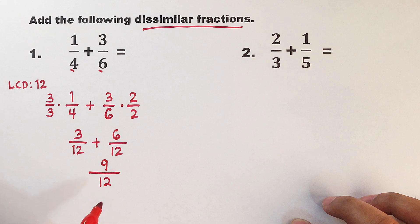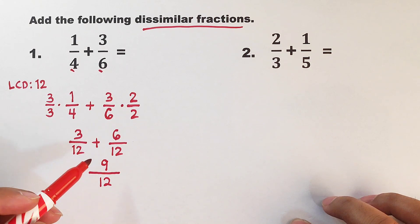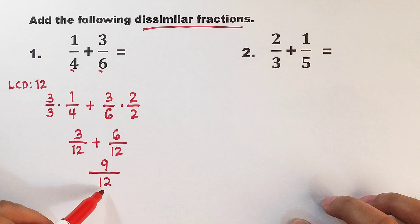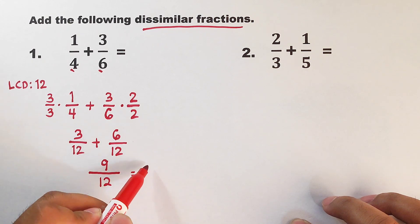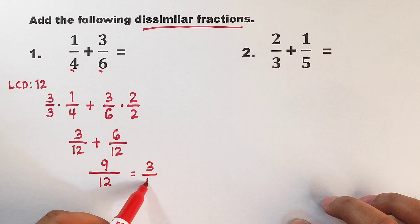So you might think that this is your final answer after adding the two fractions. The last step is to check if we can still simplify this fraction. 9 over 12 can be simplified into 3 over 4. We will divide this by 3.